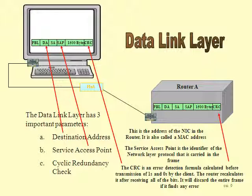Notice the preamble. Before this data can be transmitted over the physical layer, the Ethernet frame actually transmits 64 bits — 1, 0, 1, 0, 1, 0 — to set up timing between the network interface card on the client and the network interface card in router A. Remember, all the hub does is receive the 1s and 0s and regenerate them down a physical cabling.